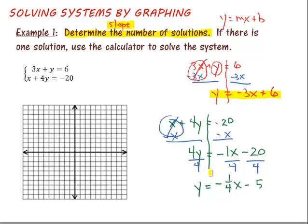First equation. Second equation. If you'll notice, the slopes are different. So here's the slope of the first one, negative 3. Slope of the second one, negative 1 fourth. They're different. So that means there is one solution. Since there's one solution, we're going to go ahead and find that solution.